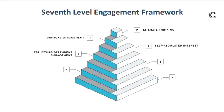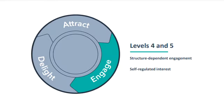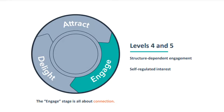These top four levels can be divided into two buckets. Levels four and five — structure-dependent engagement and self-regulated interest — are most closely tied to the engage stage in the inbound methodology. The engage stage is all about connection. It's where you build relationships with your leads and customers by engaging with them on their terms. Leads and customers who fall into these levels are now based on connecting, communicating, and actually asking for something from your audience.